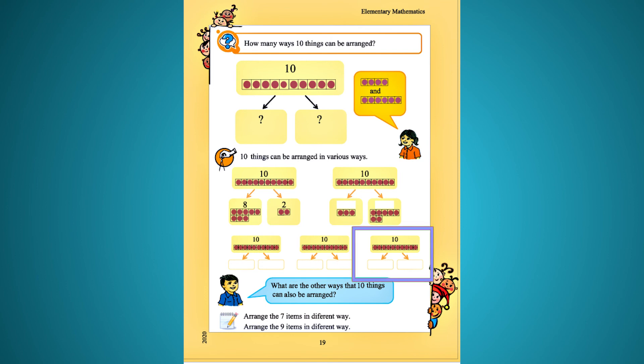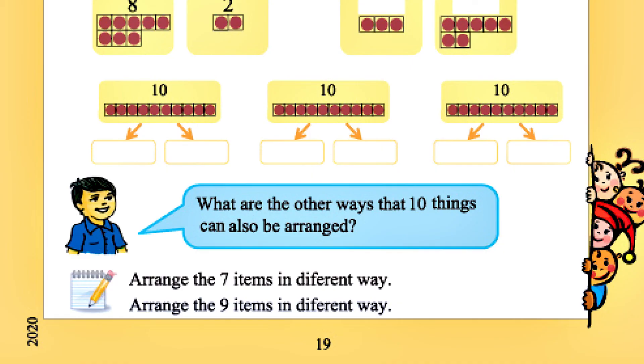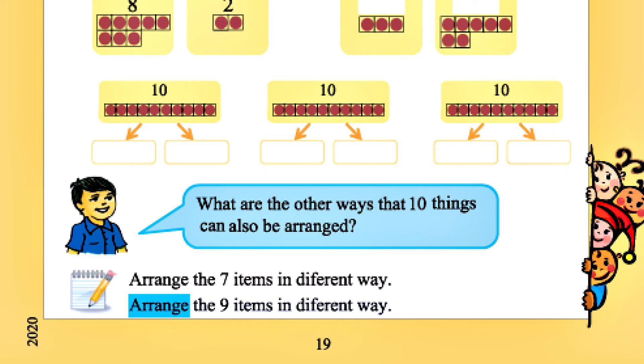Sajano jay biveno vabe. Poreta the 9, 1. What are the other ways that 10 things can also be arranged? Harthe haje — what are the other ways? E 10 kare anegthabe sajanu jathak. Arrange seven items in different ways. Arrange nine items in different ways.